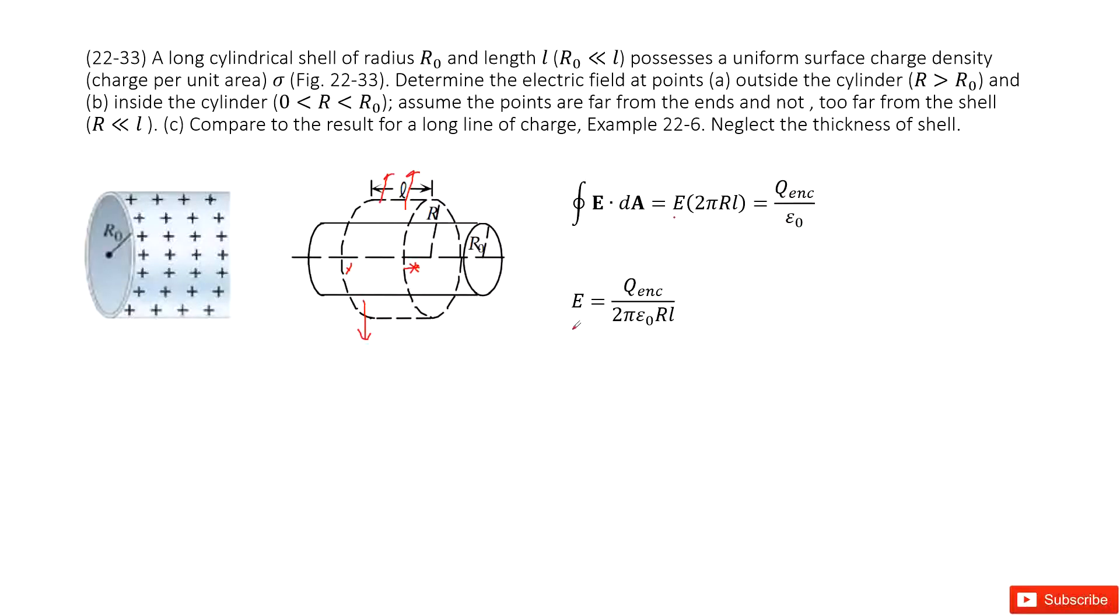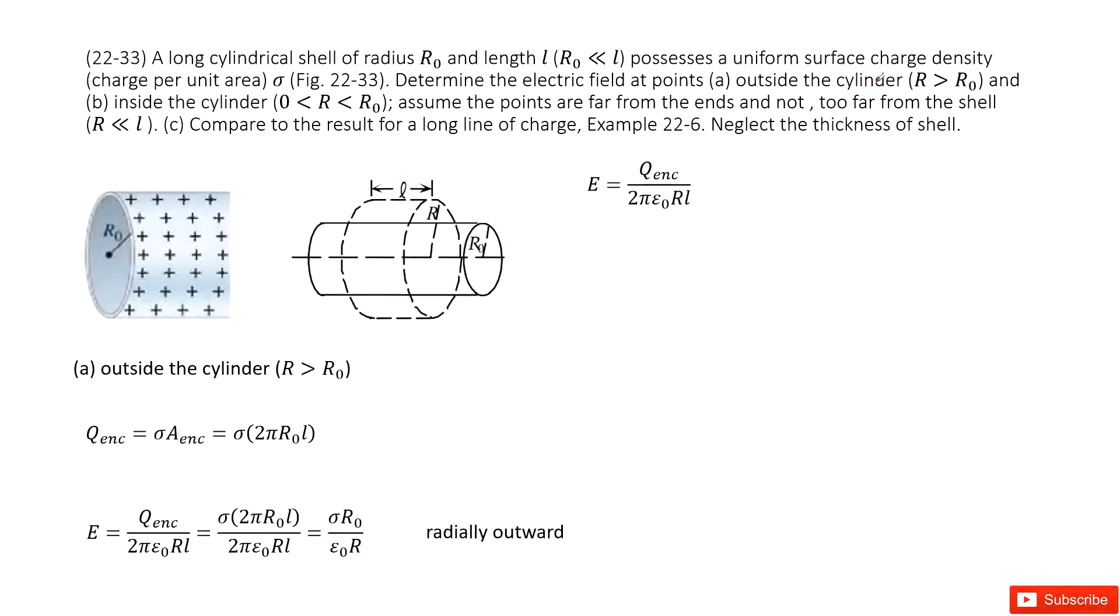So we can write E as this one. Enclosed charge divided by 2πε₀RL. So for the first case, we talk about r is larger than R₀. So outside of the cylindrical shells...